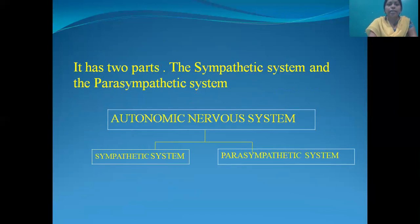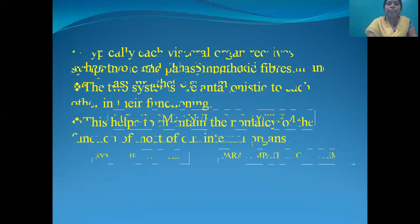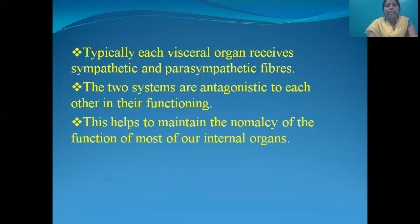The autonomic nervous system has 2 parts: the sympathetic system and the parasympathetic system. Typically, each visceral organ receives both sympathetic and parasympathetic fibers. The 2 systems are antagonistic to each other in their functioning, which helps to maintain the normalcy of the function of most of our internal organs.